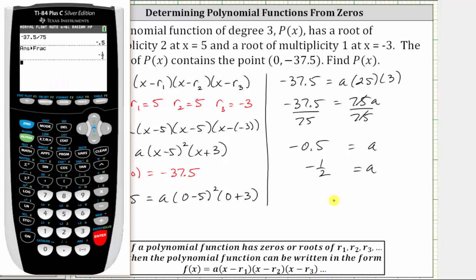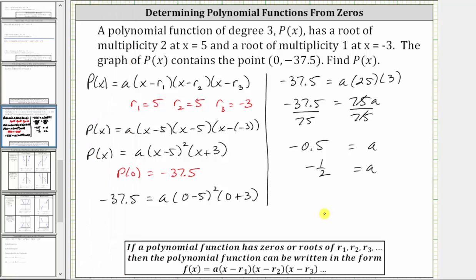Now that we know the value of a, we can write the polynomial function that satisfies all of the given conditions. The polynomial function that satisfies all of the given conditions is p(x) equals a, which we now know is negative one-half or negative 0.5, times the quantity x minus five squared times the quantity x plus three.